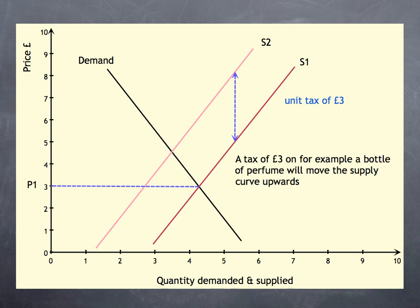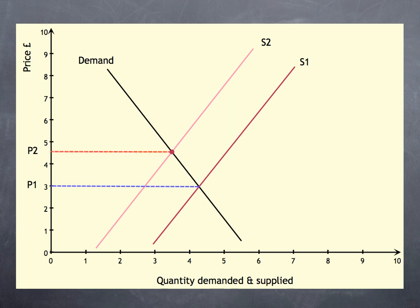We show the tax with a vertical line between the two supply curves. And we can also see that where S2 and demand meet, a new price of £4.50 is formed.